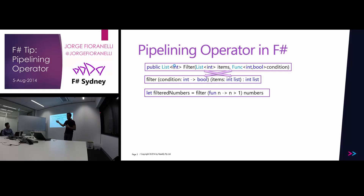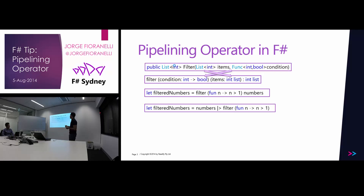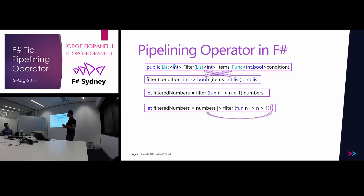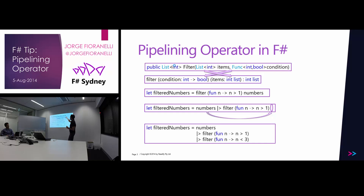Using the pipelining operator, you pass the condition as a lambda expression and then the list. What you are doing is taking the argument and putting it on the left side of the pipelining operator — this symbol here — and what the compiler does is place that at the end, passing what is on the left side as the last argument of the function invocation. It's similar to the extension method, but the extension method puts the argument at the beginning, whereas the pipeline operator puts it at the end. That's why you need to swap the order.